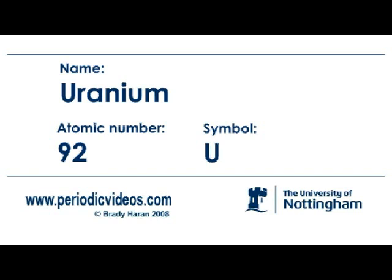Uranium is the basis of much of nuclear power, and it exists in two isotopes — that's two atoms of different weight. There's uranium-238, which is the most abundant one, and uranium-235, which is the one which, when irradiated with neutrons, will split in half and release nuclear energy.